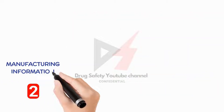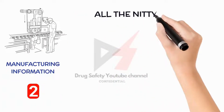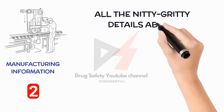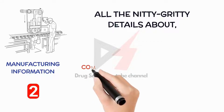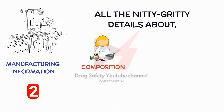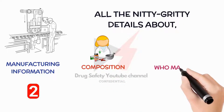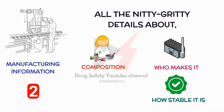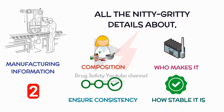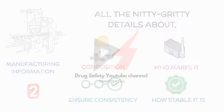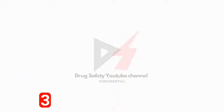Next, manufacturing information. This part describes all the details about how the drug is made — things like its composition, who makes it, how stable it is, and what controls are in place to ensure consistency. This is very important because it ensures that the sponsor can provide consistent batches of the drug for the clinical trials.